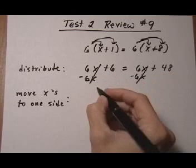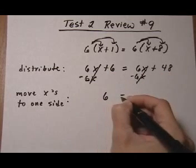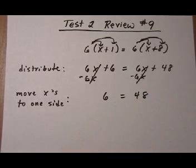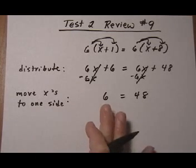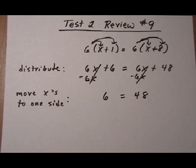That one cancels, that one cancels. And we're left with something a bit strange. Normally we'd be left with an x on the left side or somewhere, and we'd want to move numbers to the other side. But now we're left with the statement that 6 equals 48.